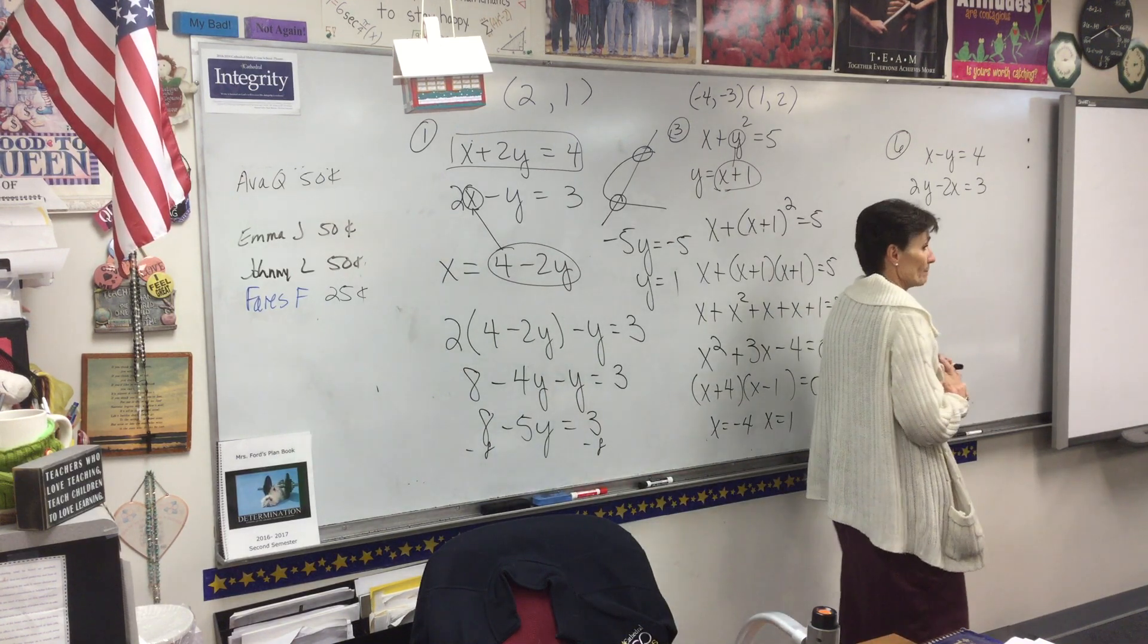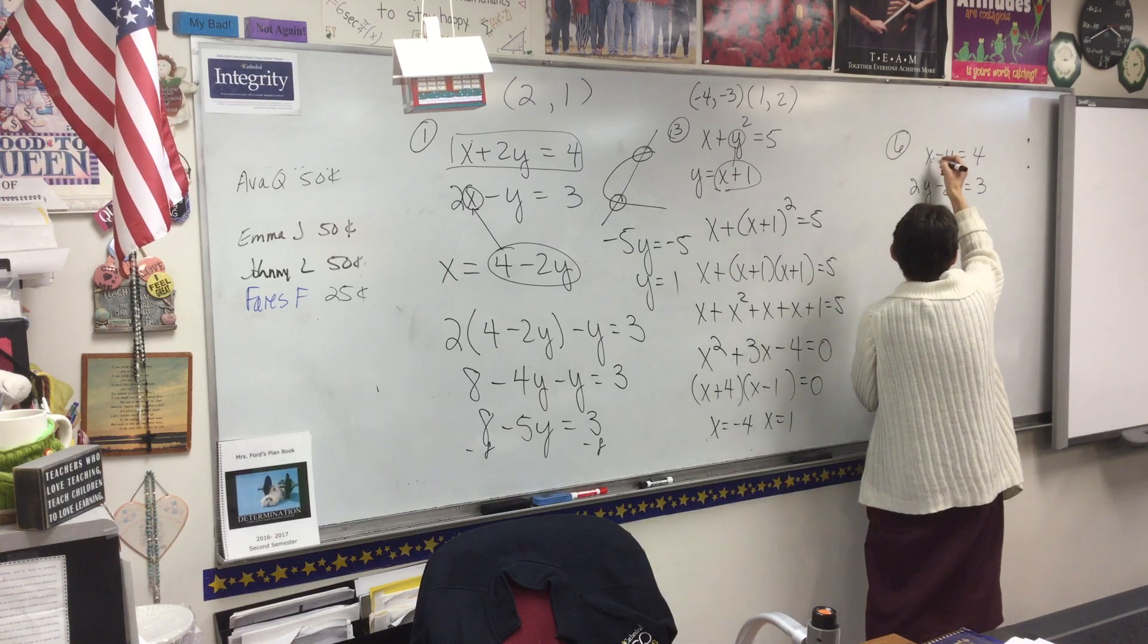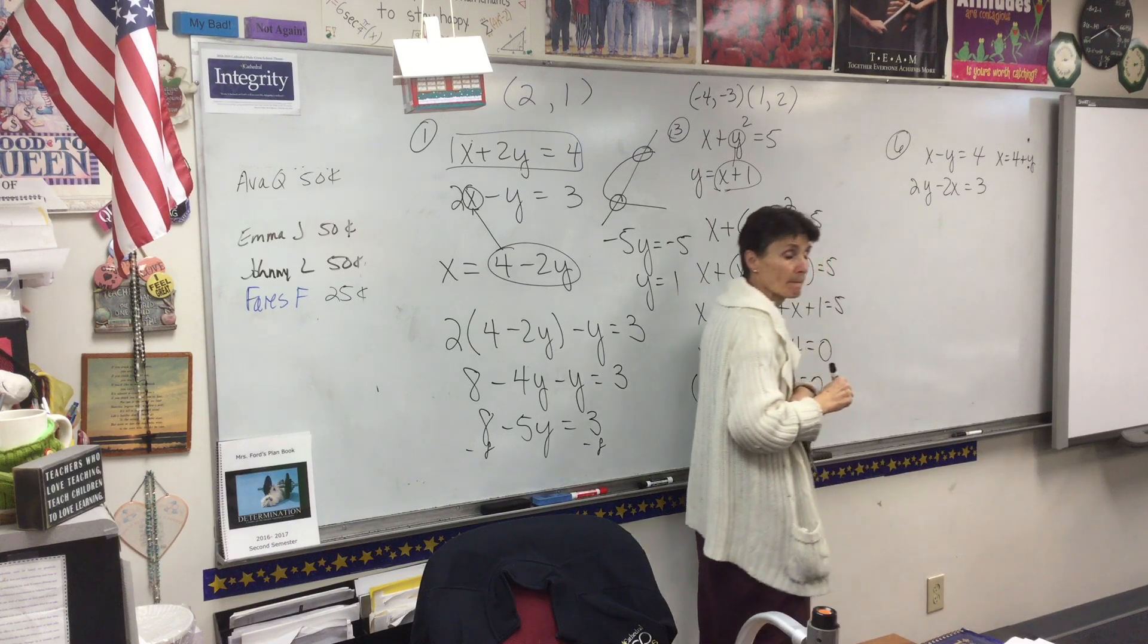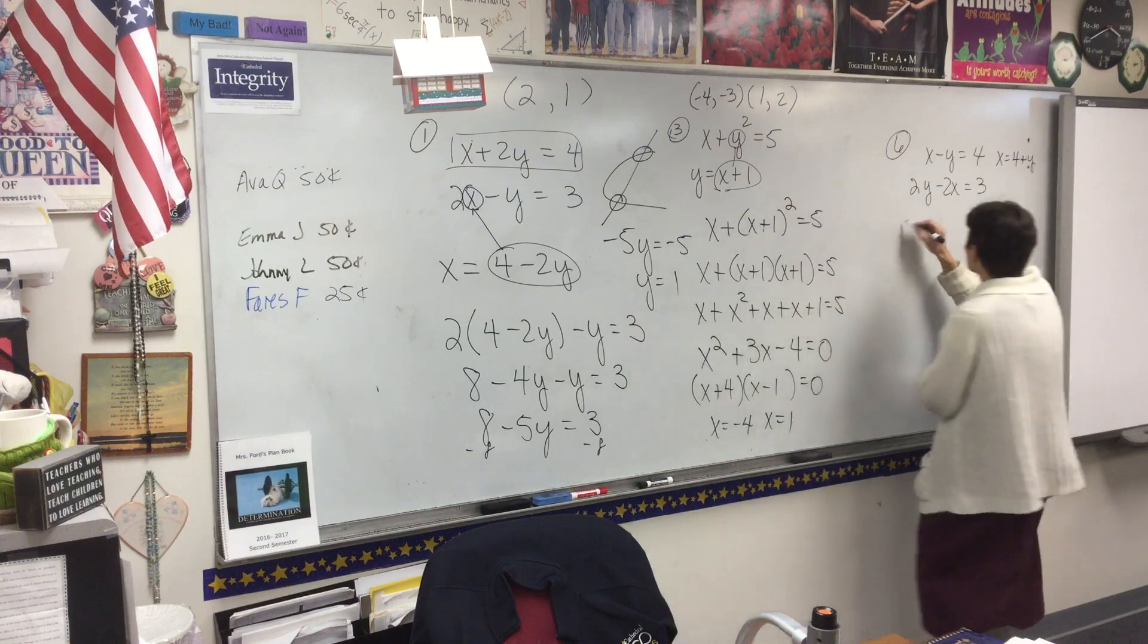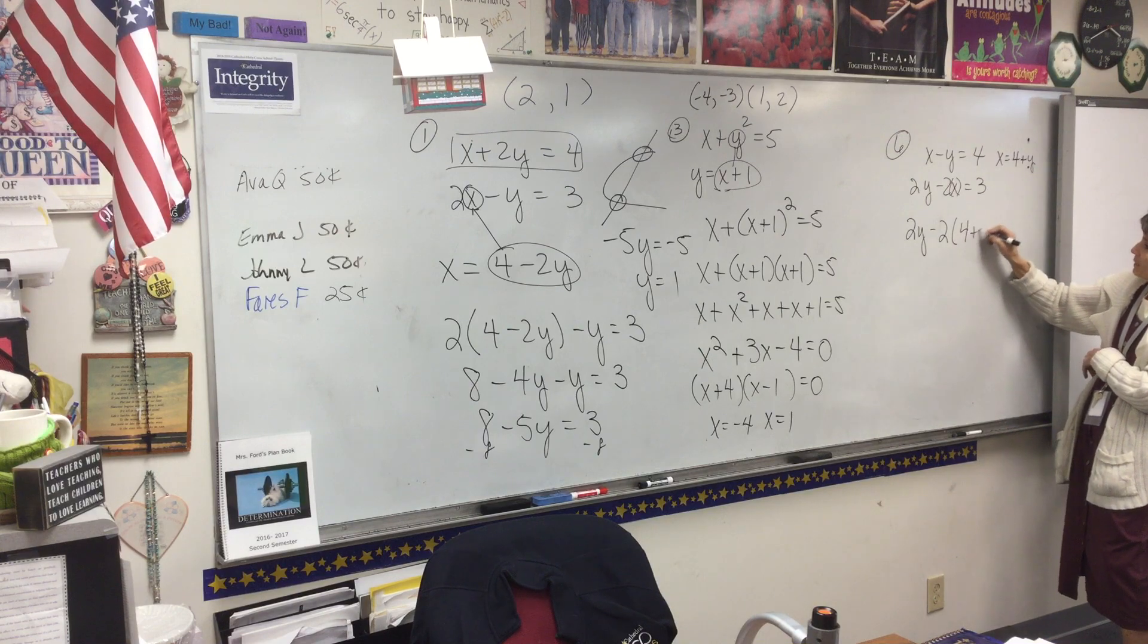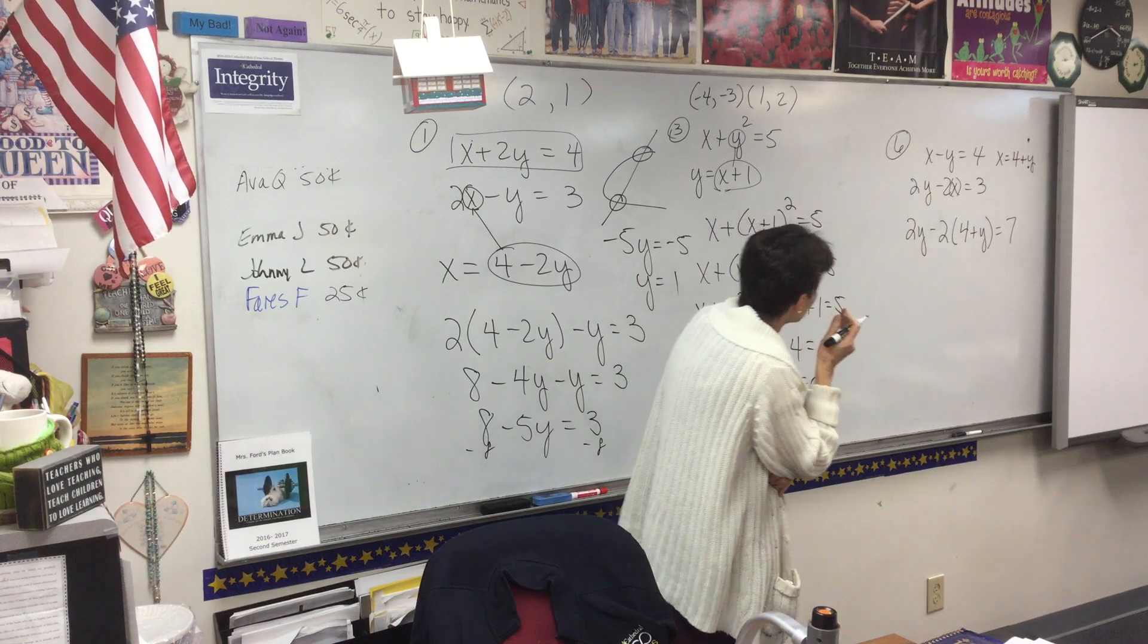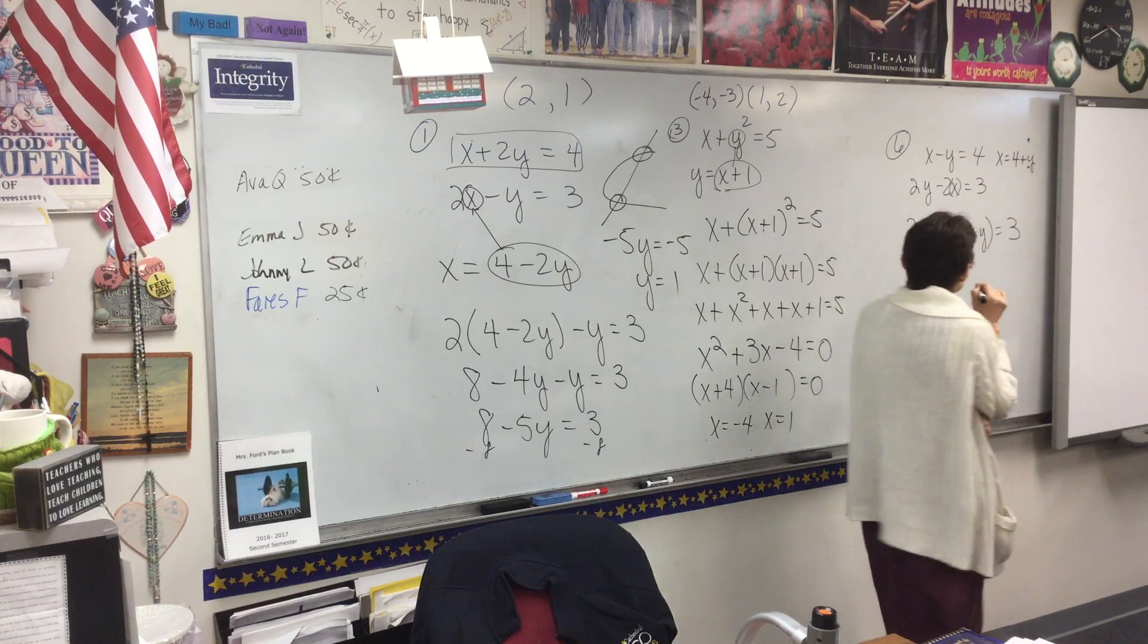All right. So what do you want to do here? Add the y over. So we're going to take this equation right here, and we're going to add the y over. So x equals 4 plus y. So now I'll plug that in for my x here. So 2y minus 2 times 4 plus y equals 3. Why did I say 7? Because I'm a moron. How about 3? Does that sound better?